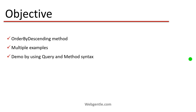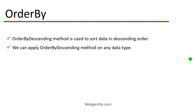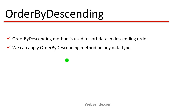First let's understand what the OrderByDescending method is. OrderByDescending is used to sort data in descending order. In the previous video we learned about the OrderBy method, which sorts data in ascending order. Now if the requirement is to sort data in descending order, we use OrderByDescending.